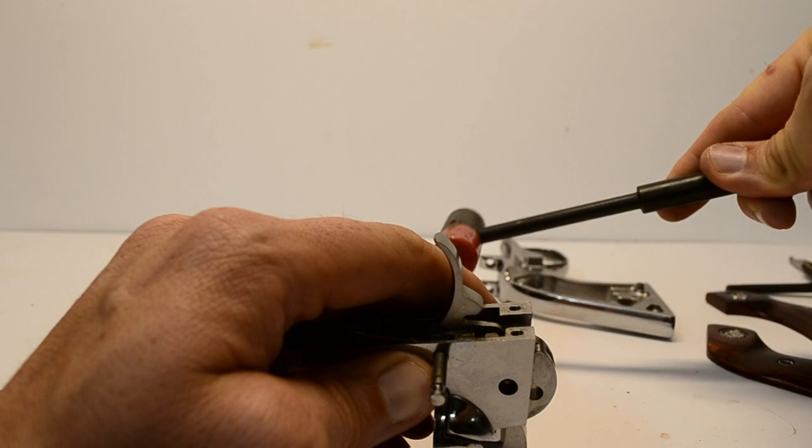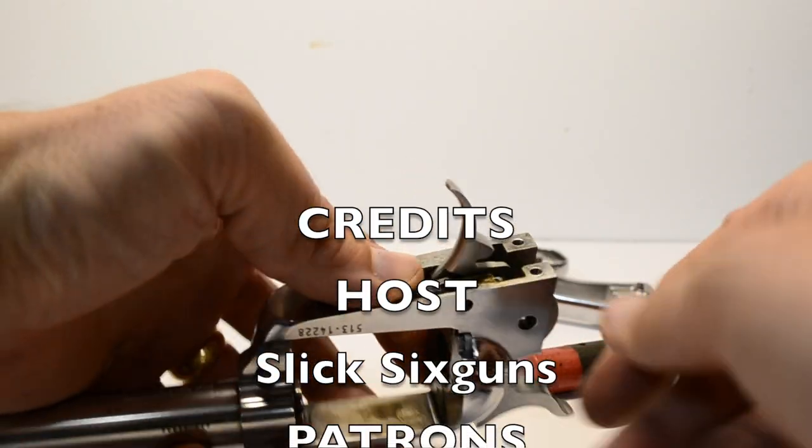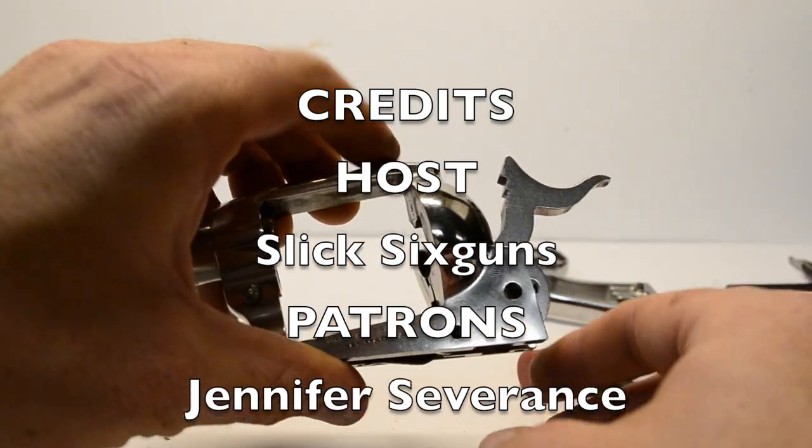First, by pressing down on the gate detent spring with a punch while simultaneously using a punch to push the pin in from either side of the revolver.